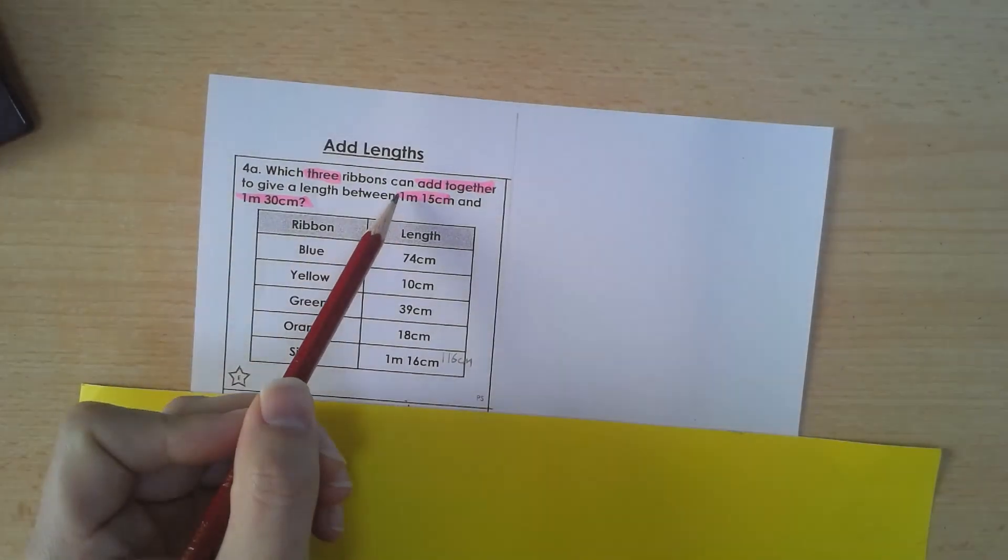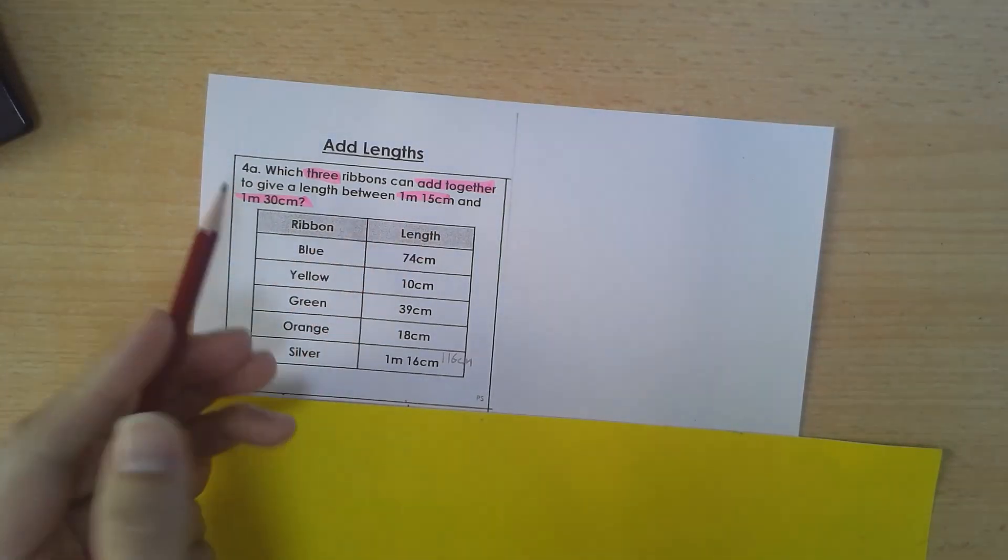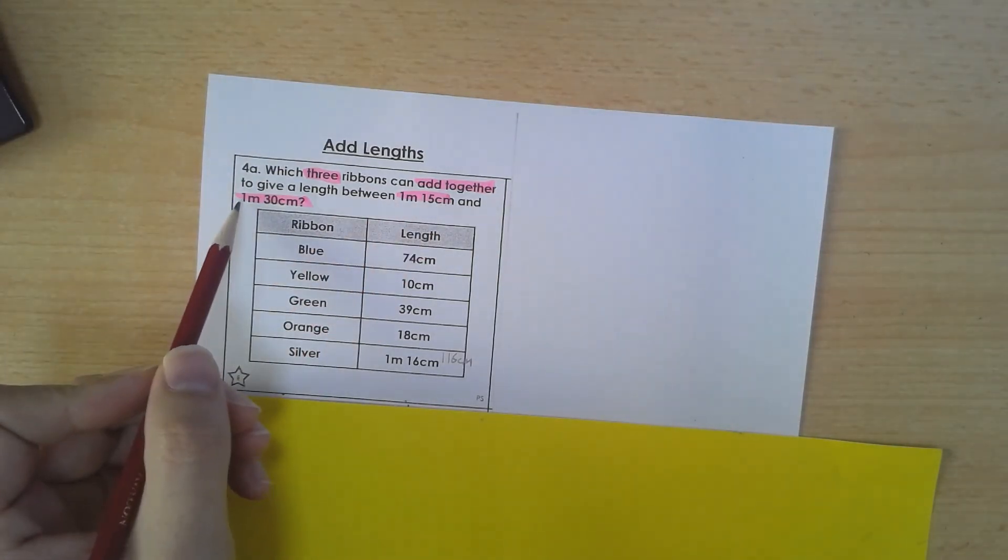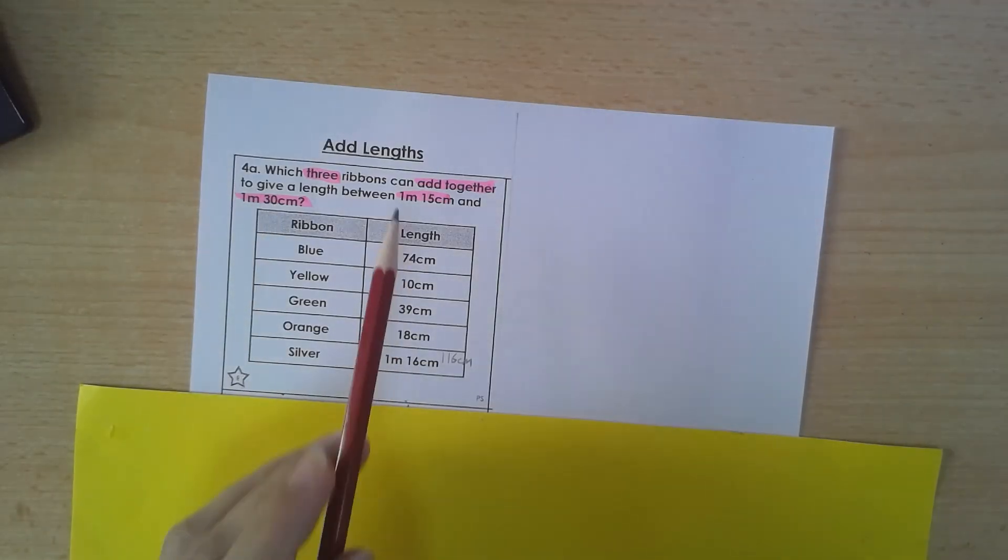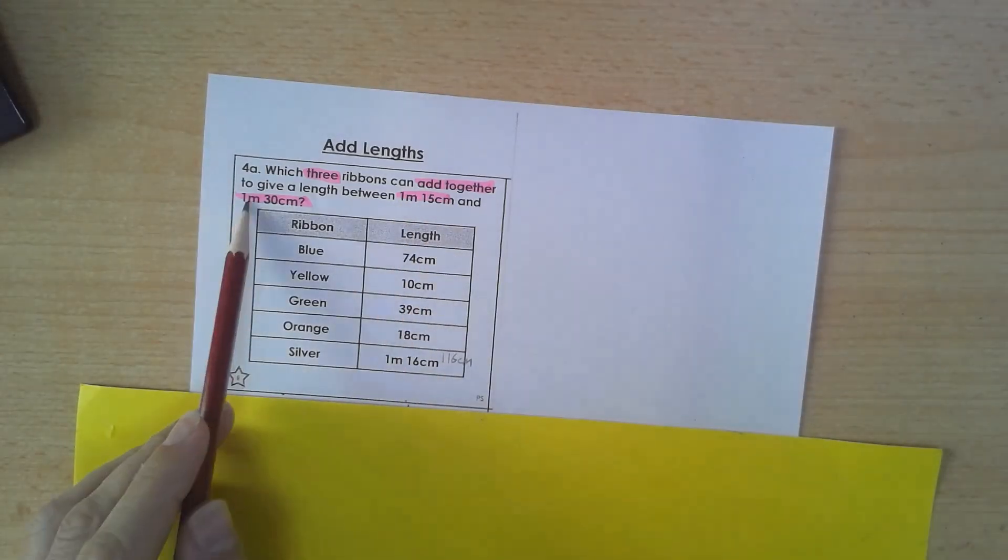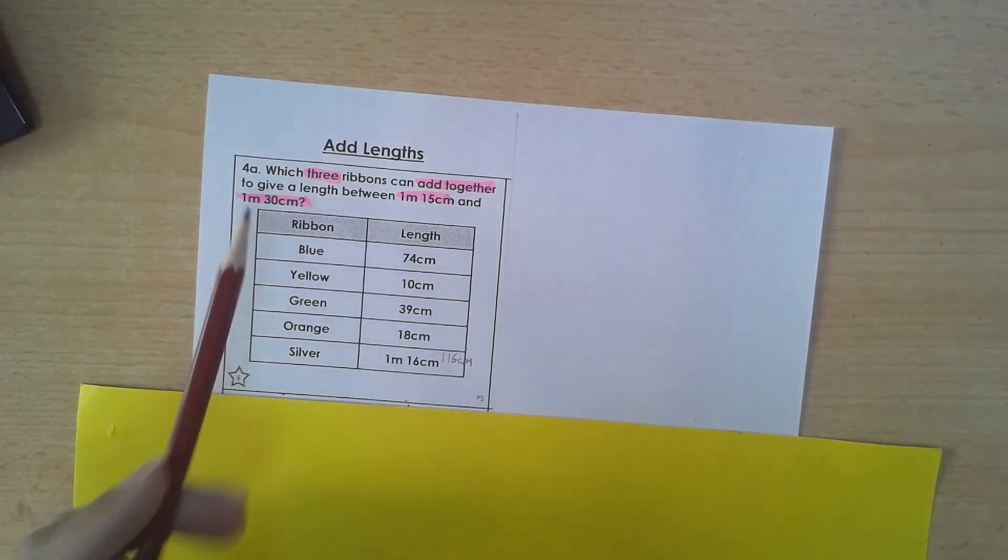Now, what it's asking us is anything in between 1 metre and 15 centimetres or 115 centimetres, and 1 metre 30 centimetres or 130 centimetres, so anything in between. So it can be 115 and more, but no more than 130 centimetres or 1 metre 30.